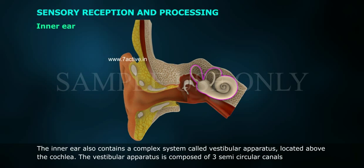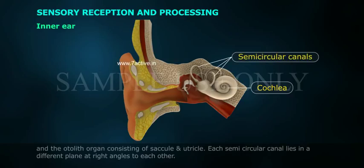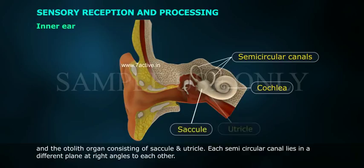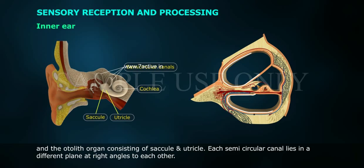The inner ear also contains a complex system called the vestibular apparatus, located above the cochlea. The vestibular apparatus is composed of three semicircular canals and the otolith organ consisting of the saccule and utricle.